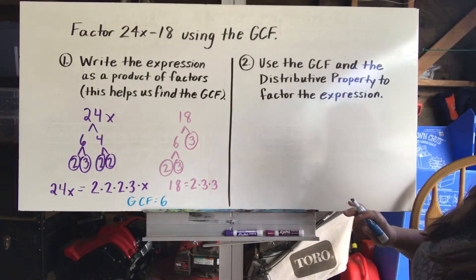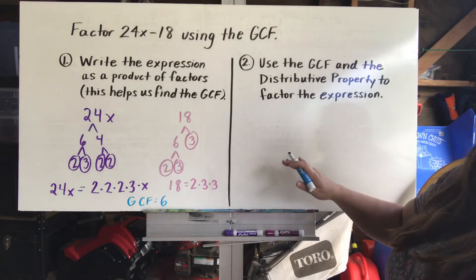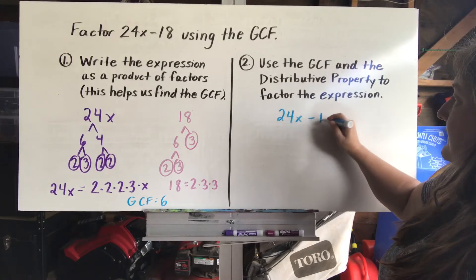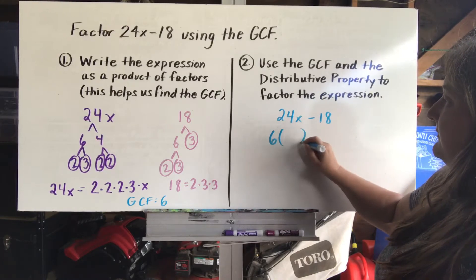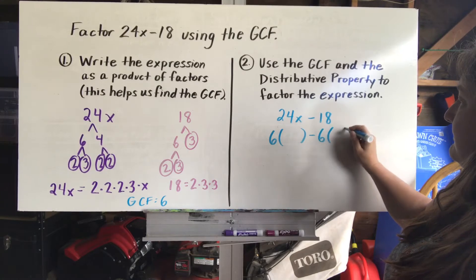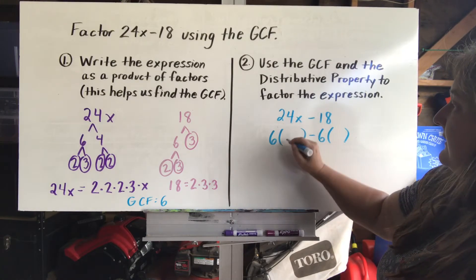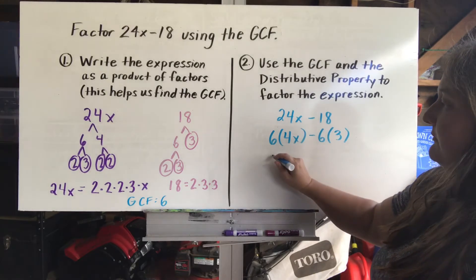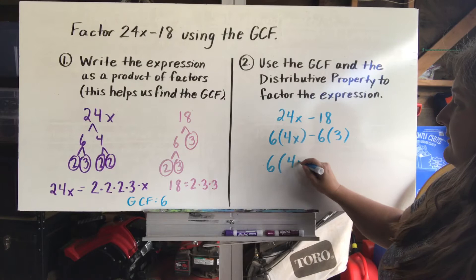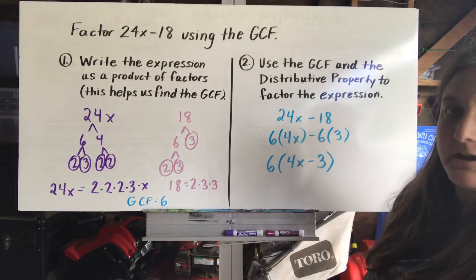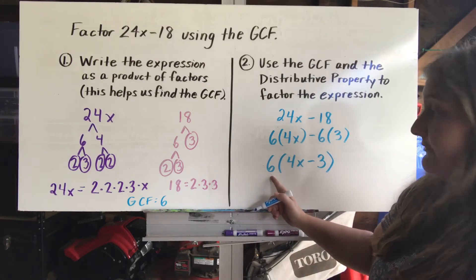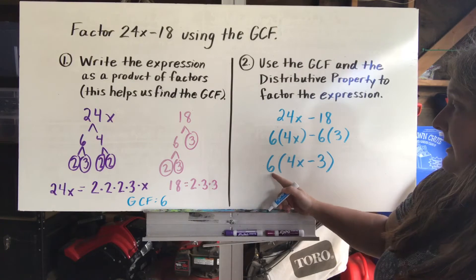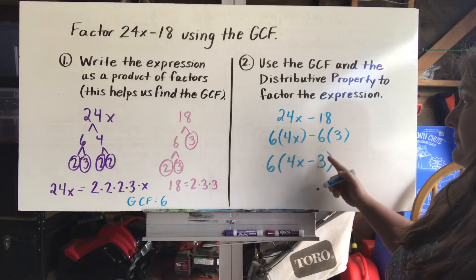So I'm going to distribute out a 6, rewriting both terms with that 6 factored out using the distributive property. I had 24x minus 18. 6 times 4x gives me 24x, and 6 times 3 gives me 18. So using the distributive property, I put 6 out front and write 4x minus 3. Now if I wanted to go back to the original, I'd just multiply the 6 back in: 6 times 4x is 24x, minus 6 times 3 is 18.